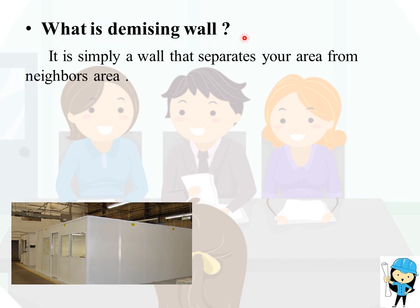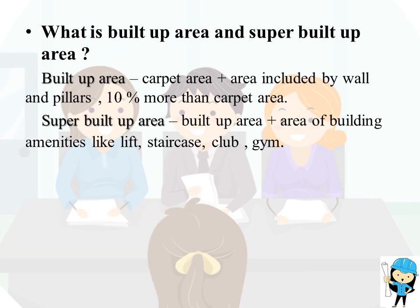What are partition walls? They are simply known as separating walls or partition walls which separate the area from the neighboring area. What is built-up area and super built-up area? Built-up area is the carpet area plus the area included by walls and pillars — usually 10% more than the carpet area. Super built-up area is the built-up area plus the area of building amenities like lifts, staircases, clubhouse, gym, etc.